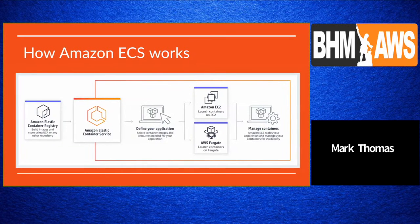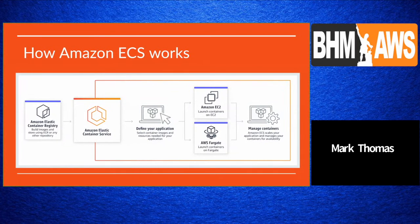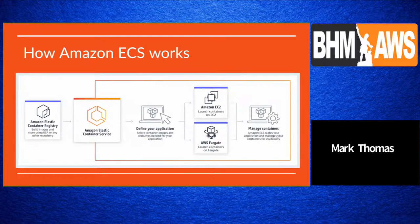How does ECS work? You have the Elastic Container Registry — essentially a private Docker registry for your account, like hub.docker.com. ECS pulls images from that registry, and you define your application using task definitions and service definitions. You then choose whether to launch on EC2 servers or go serverless with Fargate, and ECS will scale your application and manage your containers for availability.